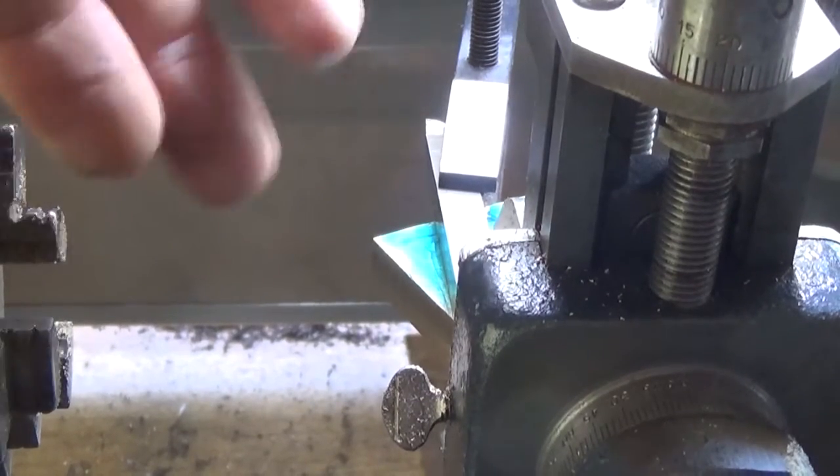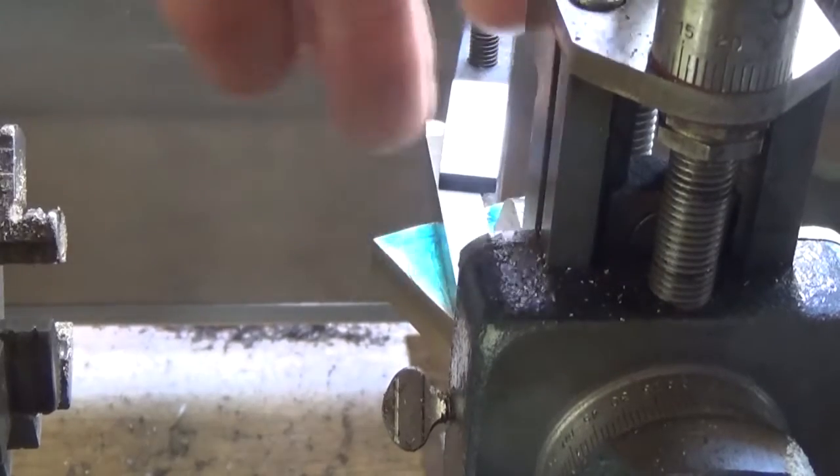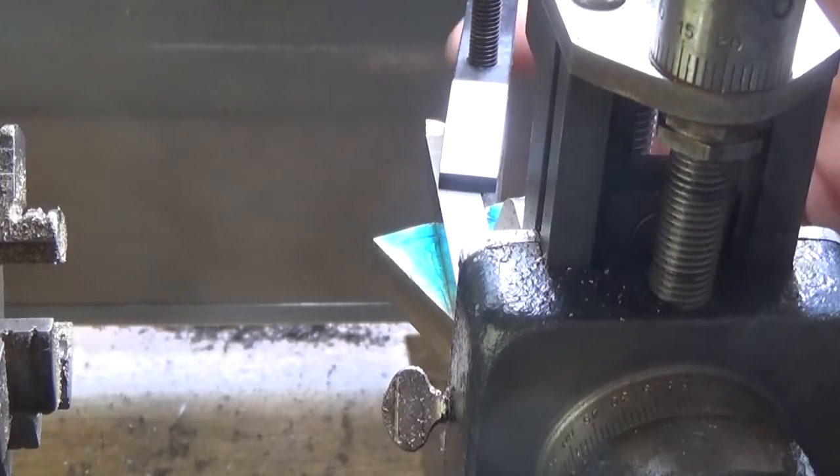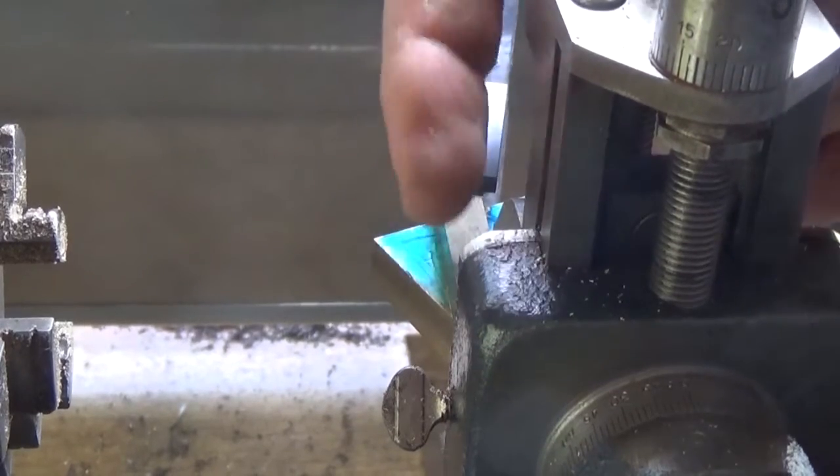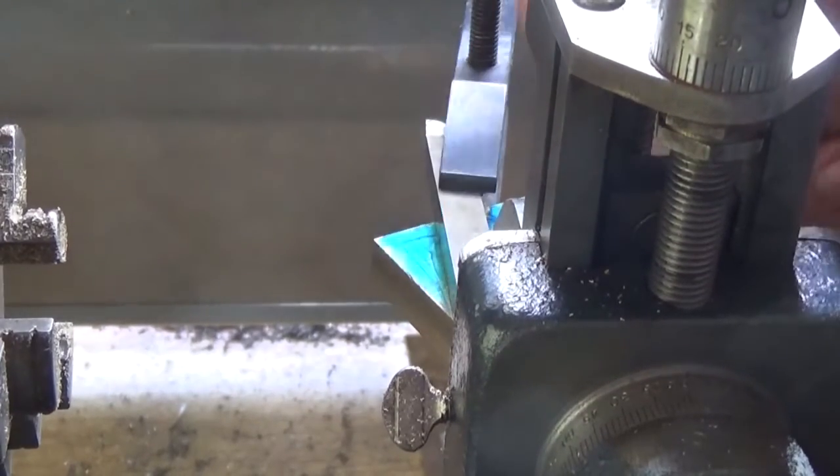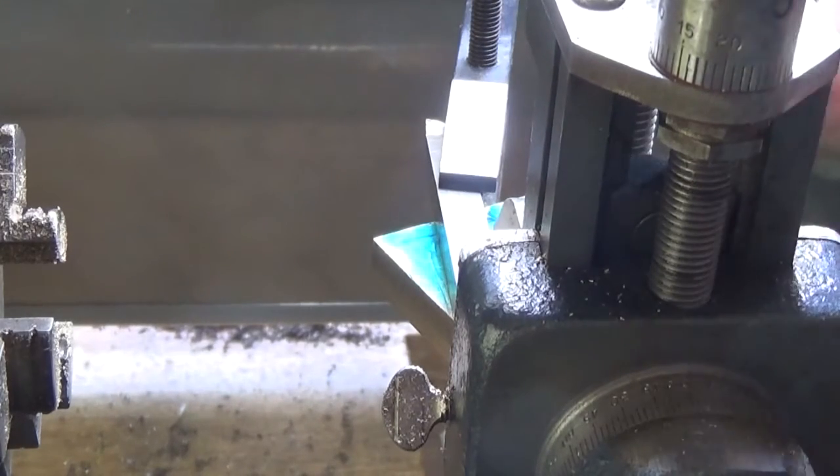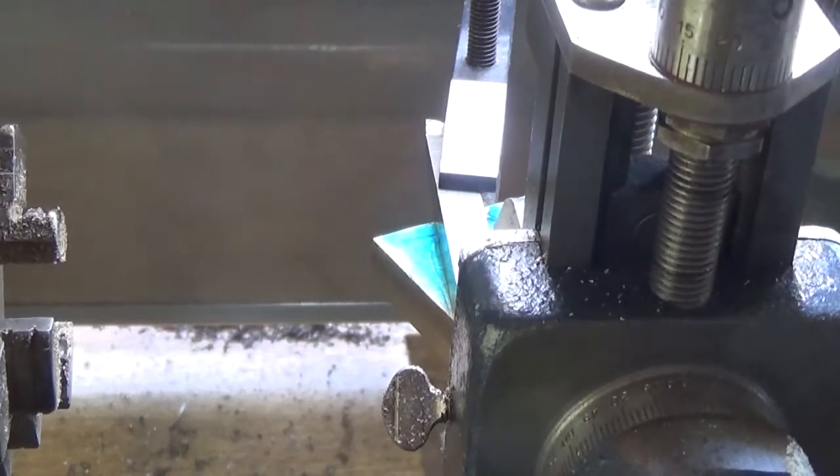So I've just set that up with a piece of tool steel and the toolmaker's clamp on there, and set him up parallel to the jaw. That should be pretty right, plenty close enough. Now I've got him nice and tight, I'm just going to take this off and mill him down to size.